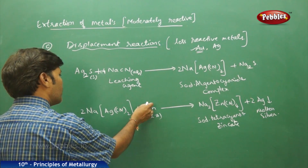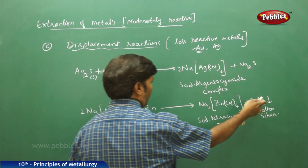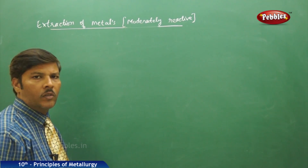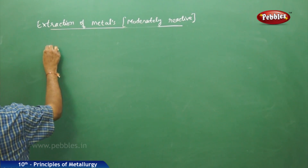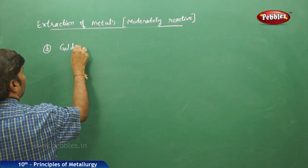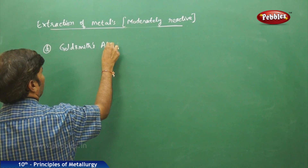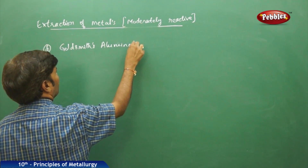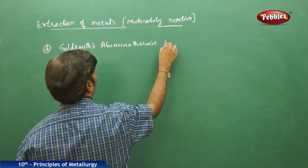Here, zinc displaces the silver in the form of molten silver in its pure form. The next part of the process is Goldschmidt's aluminothermic process.